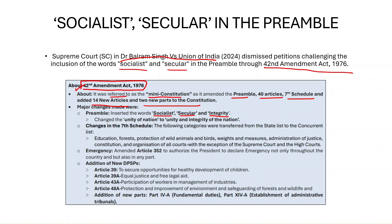In the 42nd Amendment, these three words were explicitly included in the constitution. It also changed 'unity of nation' to 'unity and integrity of nation.' Additionally, it changed the seventh schedule by transferring some subjects from the state list to the concurrent list, such as education, forest, protection of wild animals and birds, weights and measures, and administration of justice.